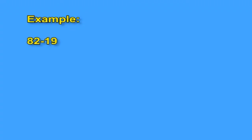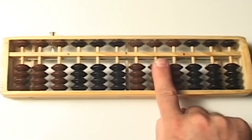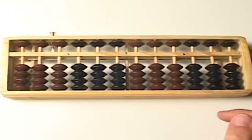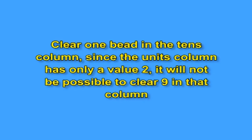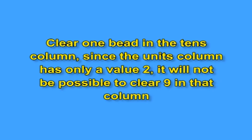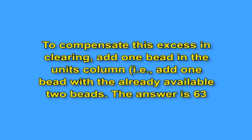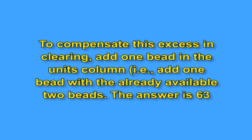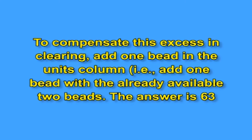Example: 82 minus 19. First, set the number 8 of 82 in the tens column. Two, set the number 2 of 82 in the units column. Now right and left hands should be on the units and tens columns separately. In this example, we have to clear 1 in the tens column and 9 in the units column. Clear 1 bead in the tens column since the units column has only a value of 2; it will not be possible to clear 9 in that column. With the help of your left hand, clear 1 bead in the tens column. To compensate this excess in clearing, add 1 bead in the units column — that is, add 1 bead with the already available 2 beads. The answer is 63.